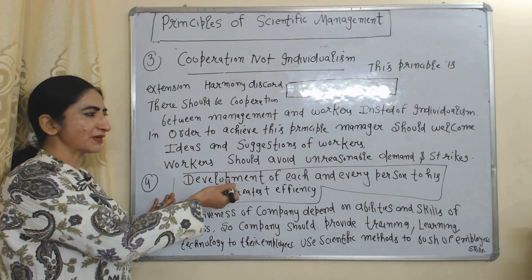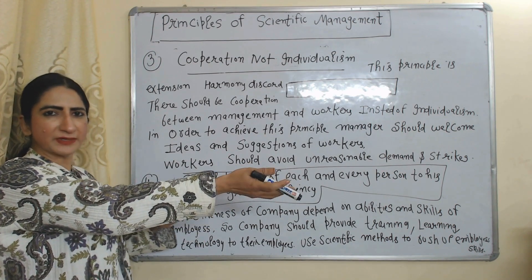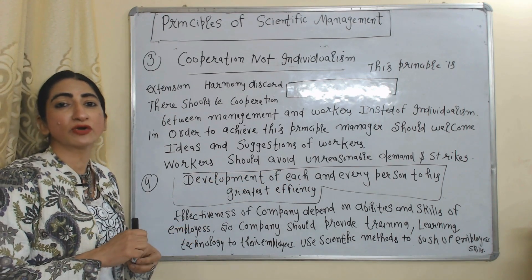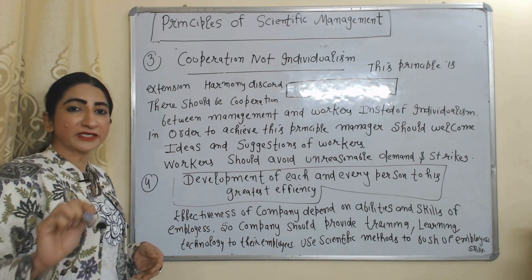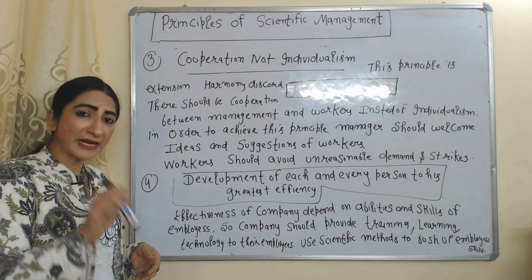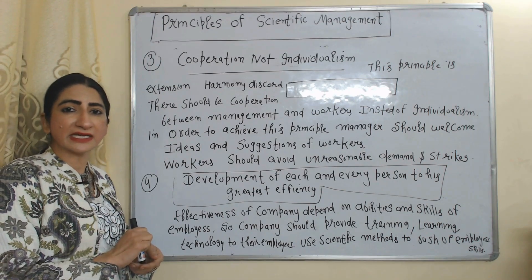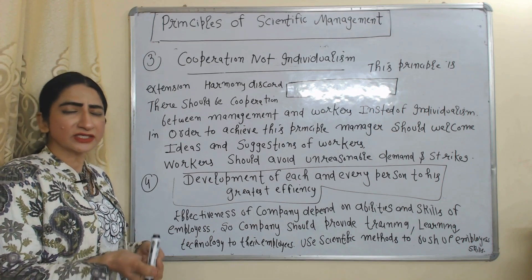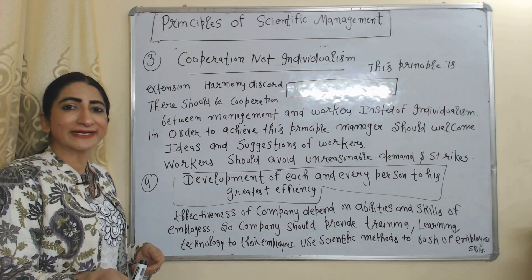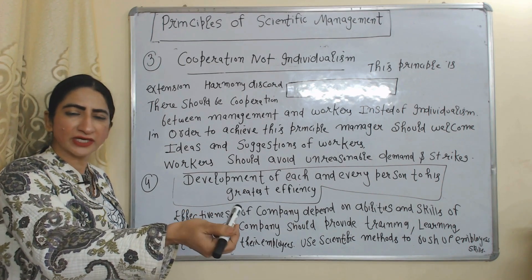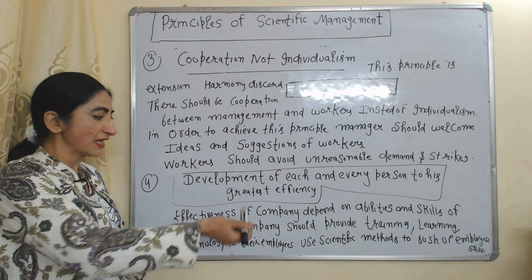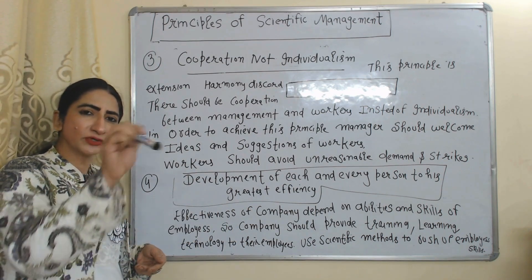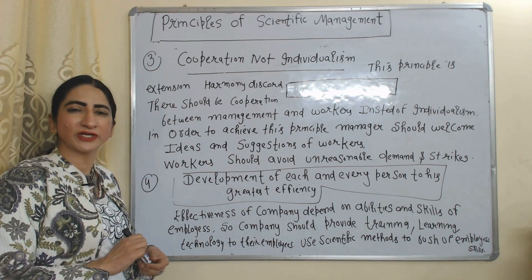Next principle is development of each and every person to his greatest efficiency. The effectiveness of any organization depends on the abilities and skills of their employees. That's why organizations should provide training, learning, and technology to their employees, and should use scientific methods to push up the skills of their employees.